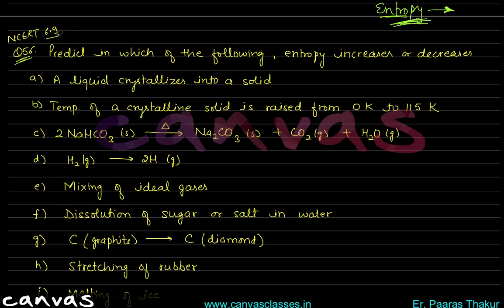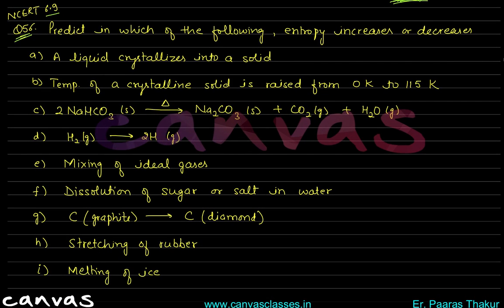We have example 6.9 and some additional problems. Predict in which of the following cases entropy increases or decreases. First case: a liquid crystallizes into a solid. Obviously, in a solid, molecules have an ordered arrangement with less freedom to move. Less freedom means less disorder, so entropy decreases.